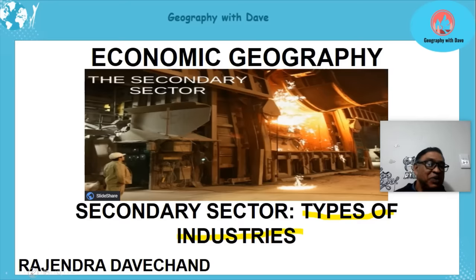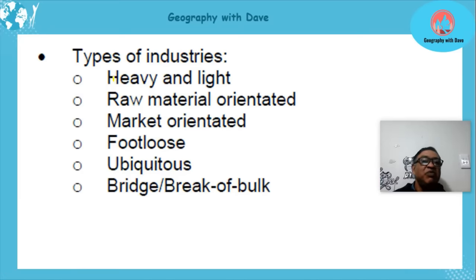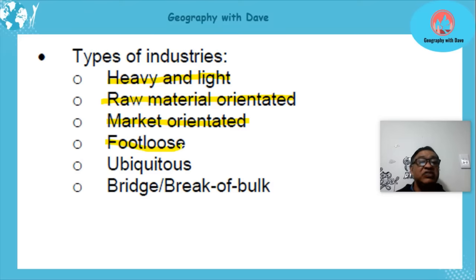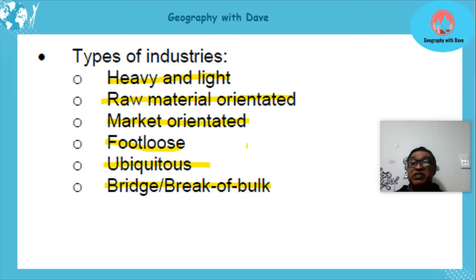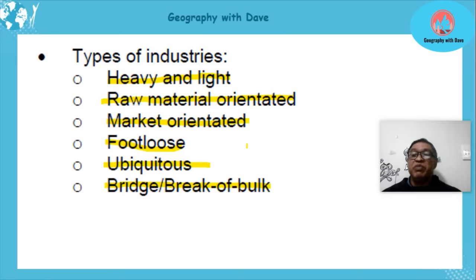We are going to look at heavy and light industry, raw material orientated industry, market orientated industry, footloose industries, ubiquitous industries, and bridge or break of bulk industries. These are the types of industries stipulated in your curriculum for Grade 12 Geography.